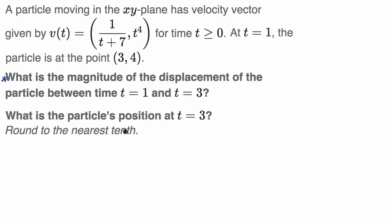You will have to use a calculator for this. We've done questions like this in one dimension, but now we're doing it in two dimensions. The key is to break it up into component dimensions — find the displacement in the x direction (Δx) and the displacement in the y direction (Δy), then use the Pythagorean theorem to find the magnitude of the total displacement.